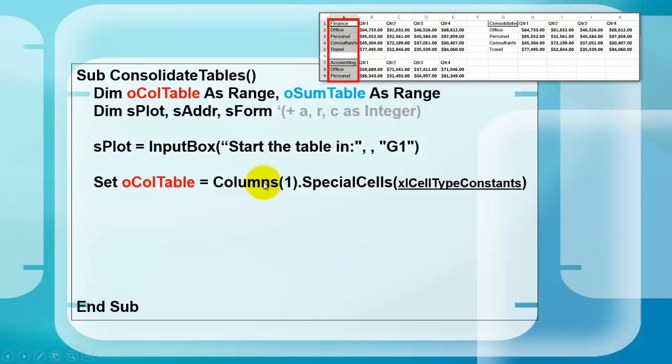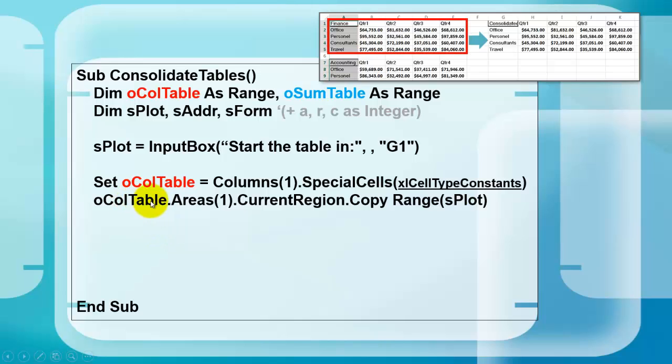From the first column in the selection of columns, we use the special cells property of the type constants. So it will highlight all the constant cells. We store that in O column table.